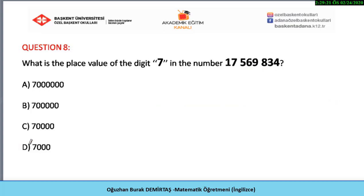Question eight: what is the place value of the digit seven in the number shown? Stop the video, find your answer and compare your answer with the correct answer. The correct answer will be given in five seconds. The answer is A: seven million.